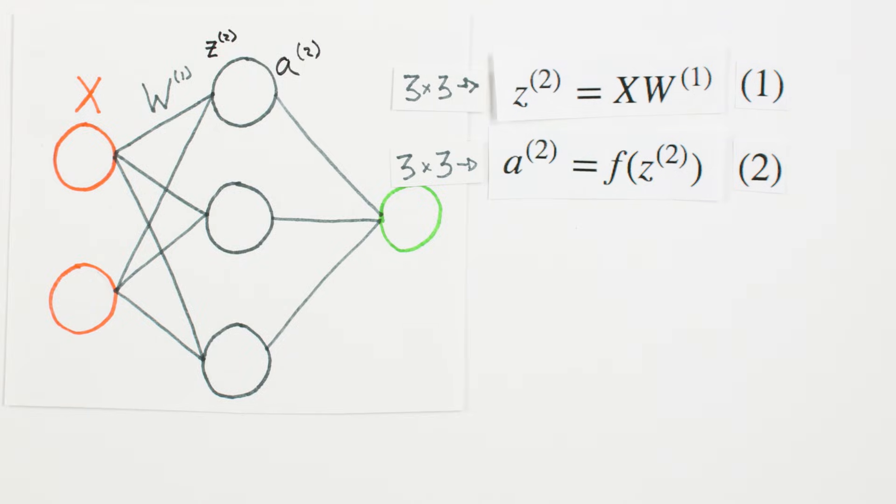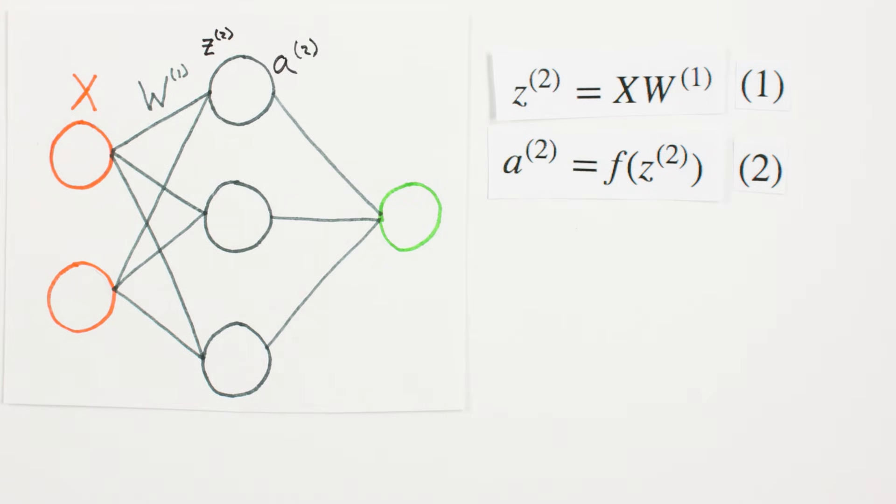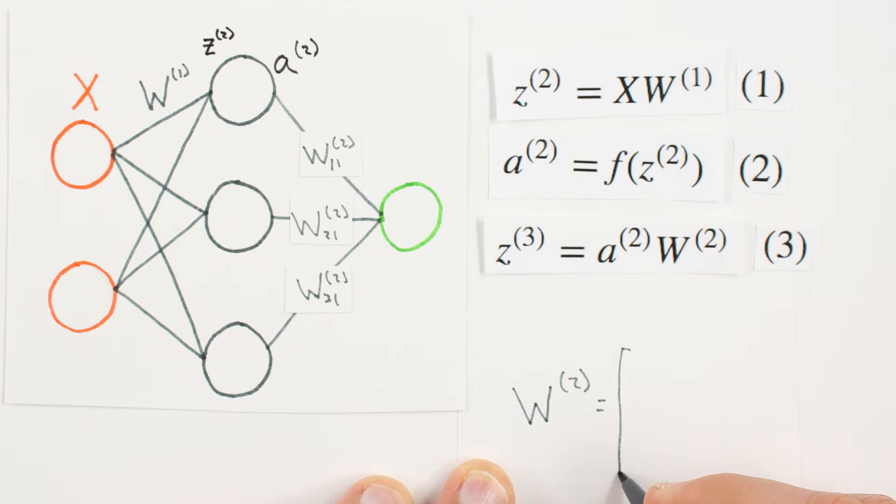To finish forward propagation, we need to propagate A2 all the way to our output y-hat. We've already done the heavy lifting in our previous layer, so all we have to do now is multiply A2 by our second layer weights W2, and apply one more activation function.